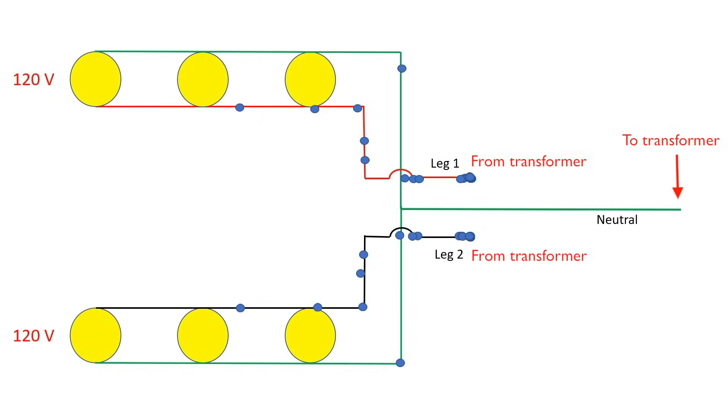You can see here on this diagram that I have leg one and leg two labeled. So the three lights or loads on the top of the diagram are one leg and the three on the bottom are the other leg. Although this is not completely accurate, for simplification purposes, we're going to say that the upper half or leg one is at positive 120 volts and leg two, the bottom part, is at negative 120 volts.